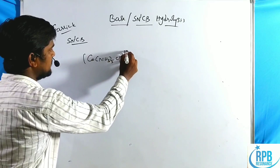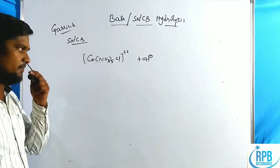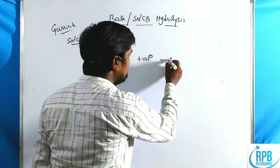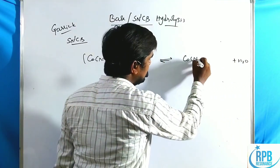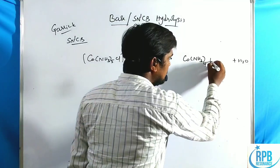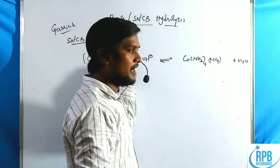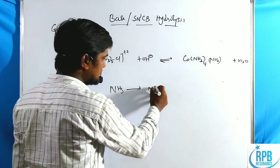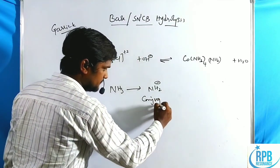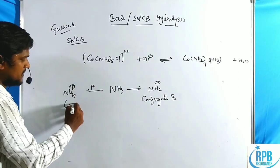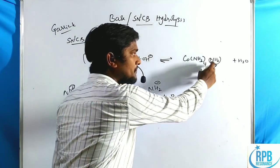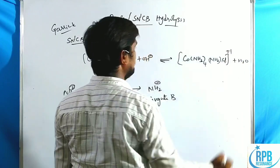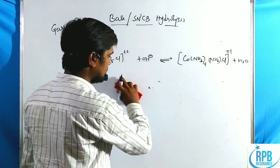The conjugate base mechanism involves three steps. In the first step, a proton is transferred from one of the ammonia ligands to OH minus. The OH minus abstracts the proton, forming H2O, and the coordinated ammonia loses a proton to become NH2 minus — that is the conjugate base. Addition of a proton gives NH4 plus (conjugate acid). In this step, X (e.g., Cl) remains, and the oxidation state decreases. This first step is an equilibrium reaction.